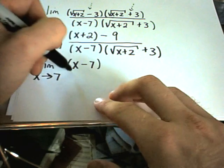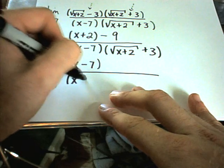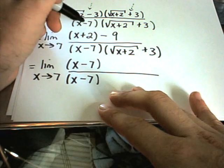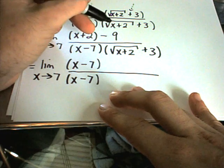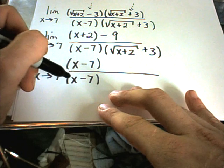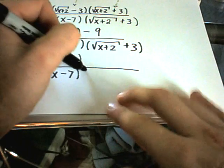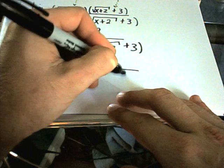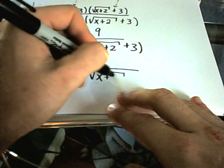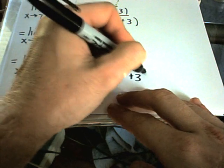This is why I didn't multiply out the bottom. If I had distributed when I multiplied by the conjugate, it wouldn't have been so obvious that these things would cancel out. I still have √(x+2) + 3 left over.